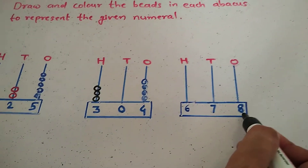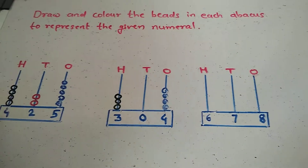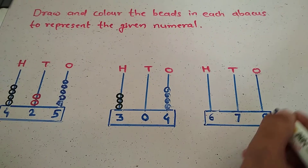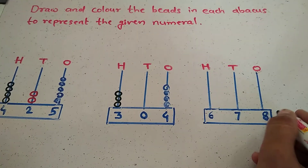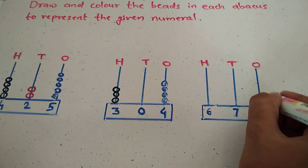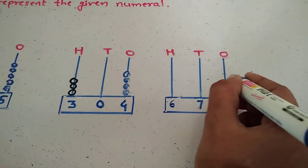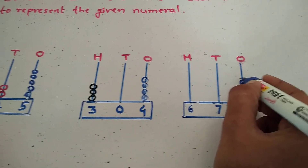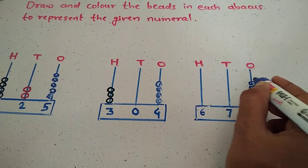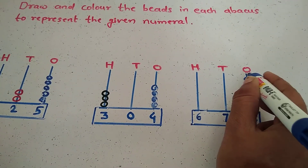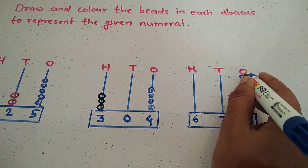Which number is in the ones place? Eight. Draw the beads — eight: one, two, three, four, five, six, seven, eight.